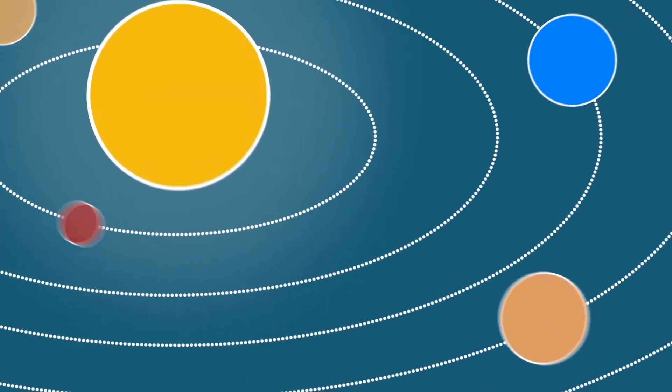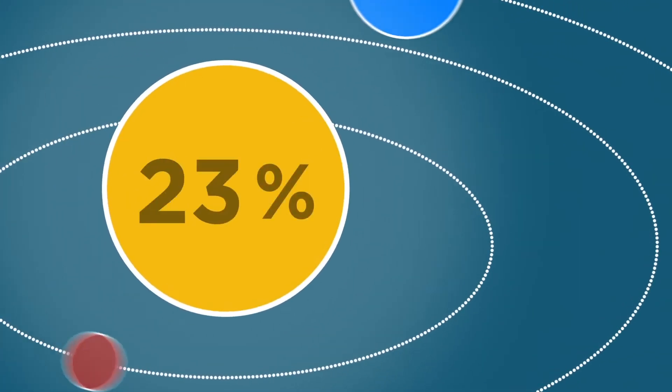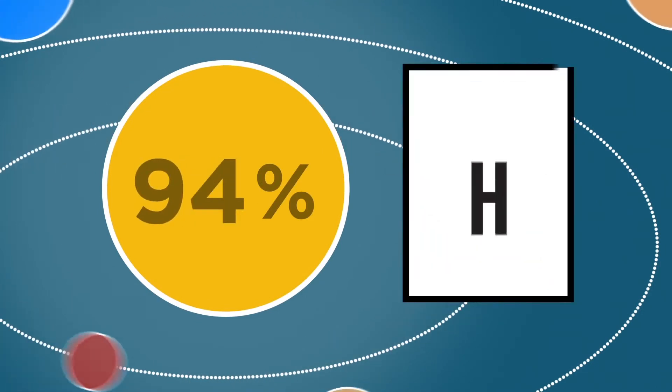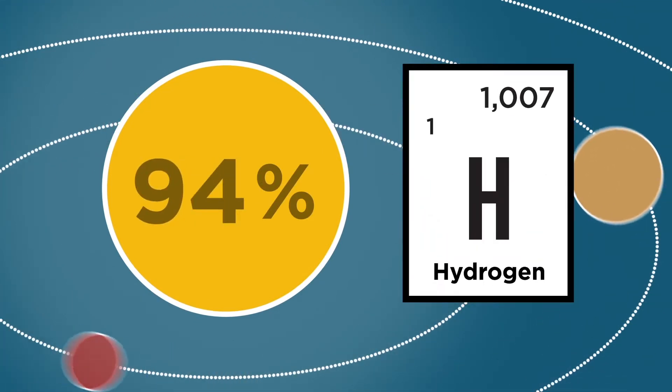In stars like the Sun, 94% of all the atoms are hydrogen. The human body itself is very scarce on chemical elements.